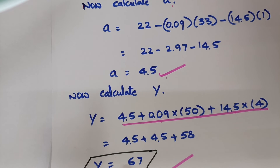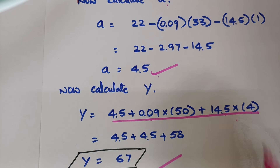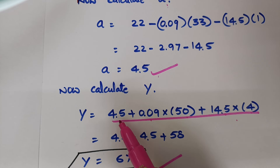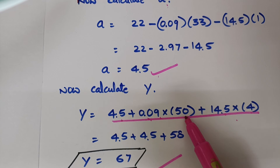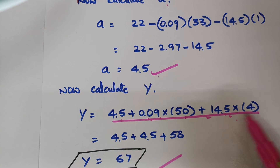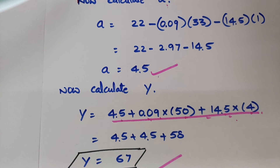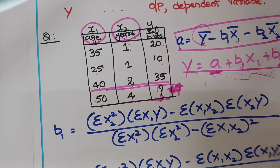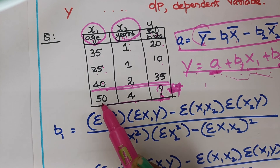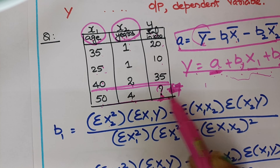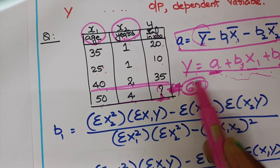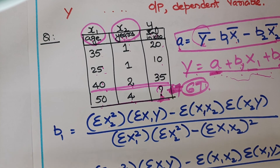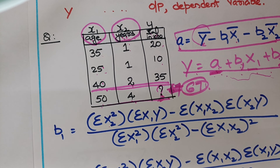Now calculate y using the multiple regression equation: y equals a plus b1·x1 plus b2·x2, which gives y equal to 67. So if a person is 50 years old with 4 years of experience, he can expect a salary of 67. This is multiple regression.